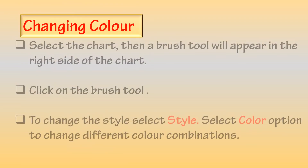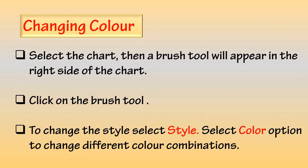Another method to change the color: Select the chart, then a brush tool will appear on the right side of the chart. Click on the brush tool. To change the style, select Style, or select the Color option to change to a different color combination.